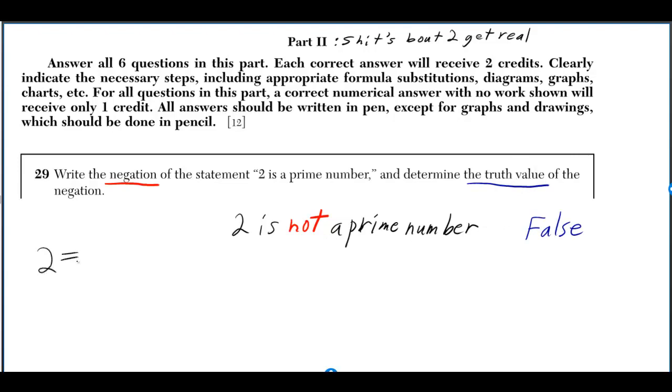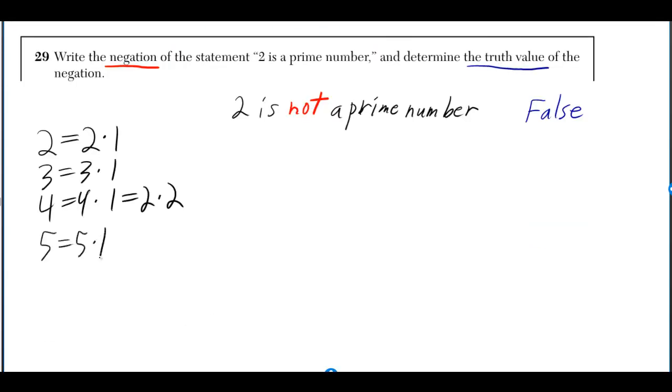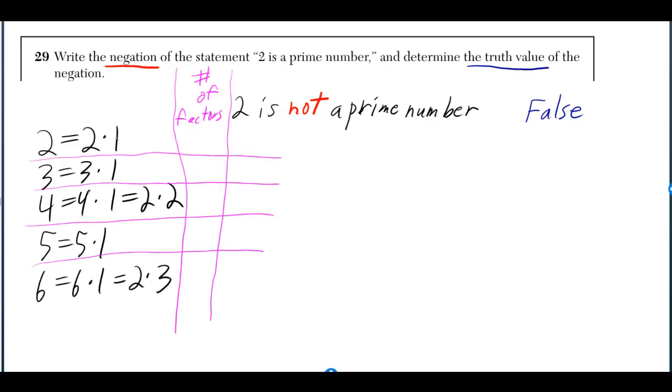2 is a prime number because it can only be written as 2 times 1 if you want to use whole number factors. Same for three, not so for four, same for five, not so for six.